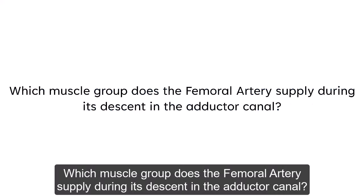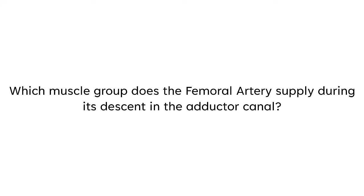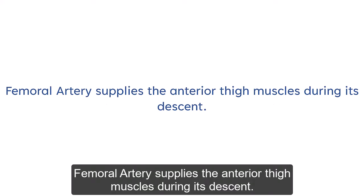Which muscle group does the femoral artery supply during its descent in the adductor canal? The femoral artery supplies the anterior thigh muscles during its descent.